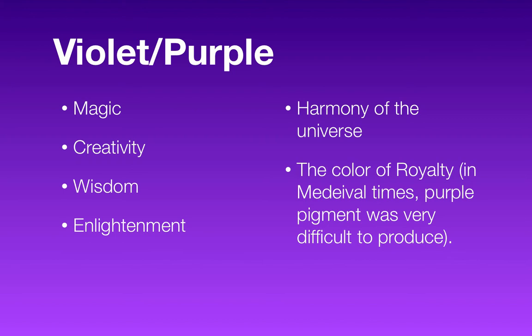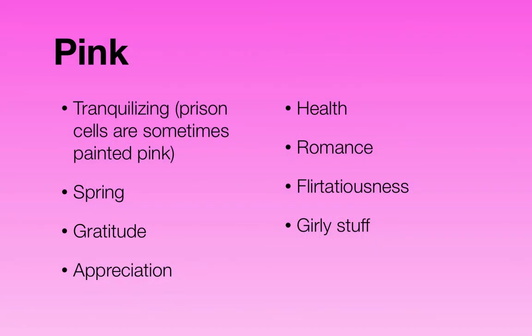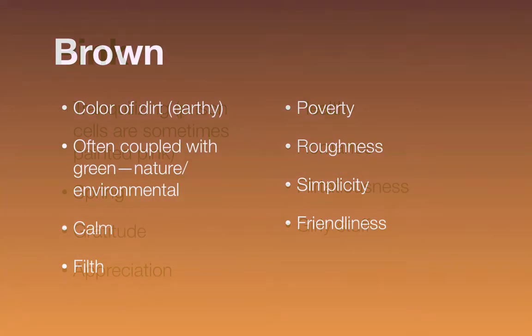Violet or purple represents magic, creativity, wisdom, enlightenment, the harmony of the universe, and royalty — that's because in medieval times purple pigment was very difficult to produce. Pink is tranquilizing — sometimes prison cells are pink. It represents spring, gratitude, appreciation, health, romance, and flirtatiousness. Brown is the color of dirt — an earthy color, often coupled with green in nature or environmental design. It represents calm, simplicity, and friendliness.